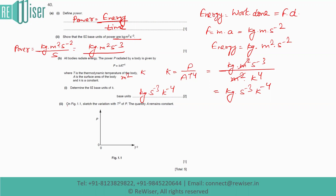The next part asks us to sketch the variation of P with T² on figure 1.1, with A remaining constant. Since P is directly proportional to T⁴, if we treat T² as a single variable x, then P is proportional to x², which is a quadratic relationship — a parabola.